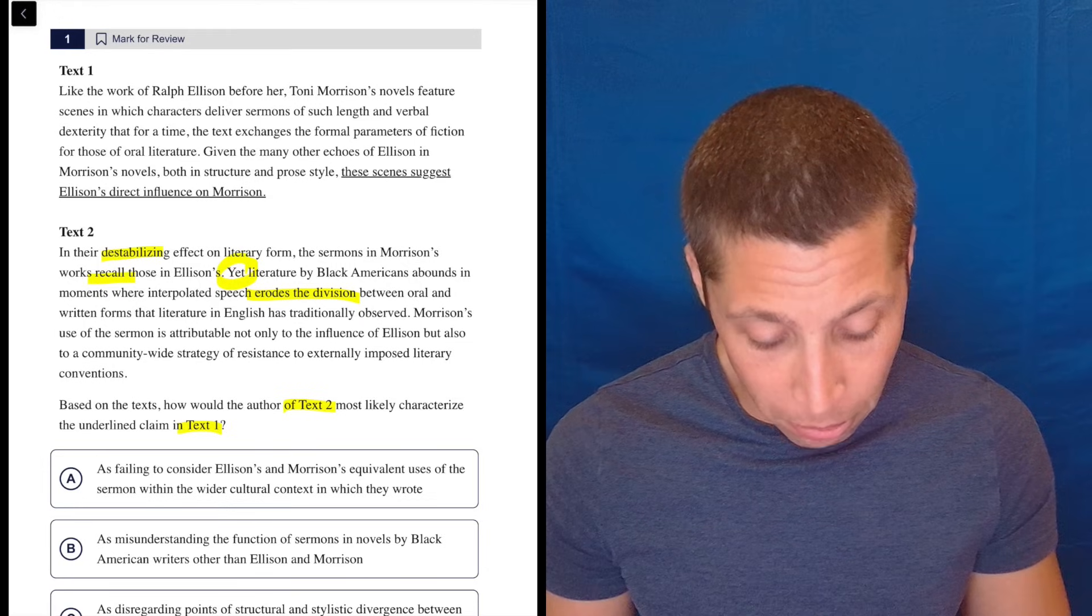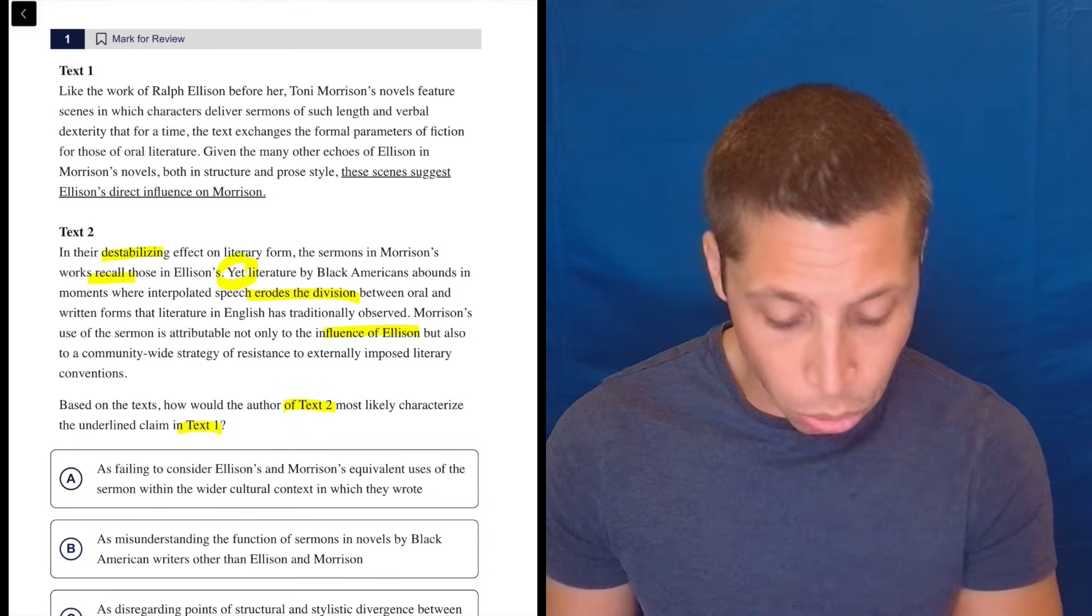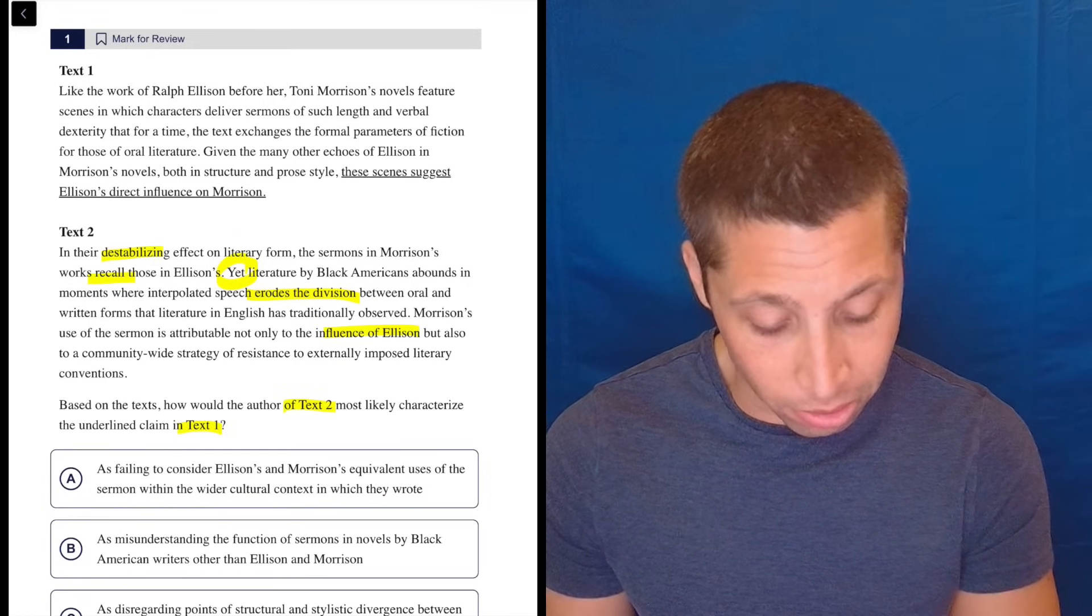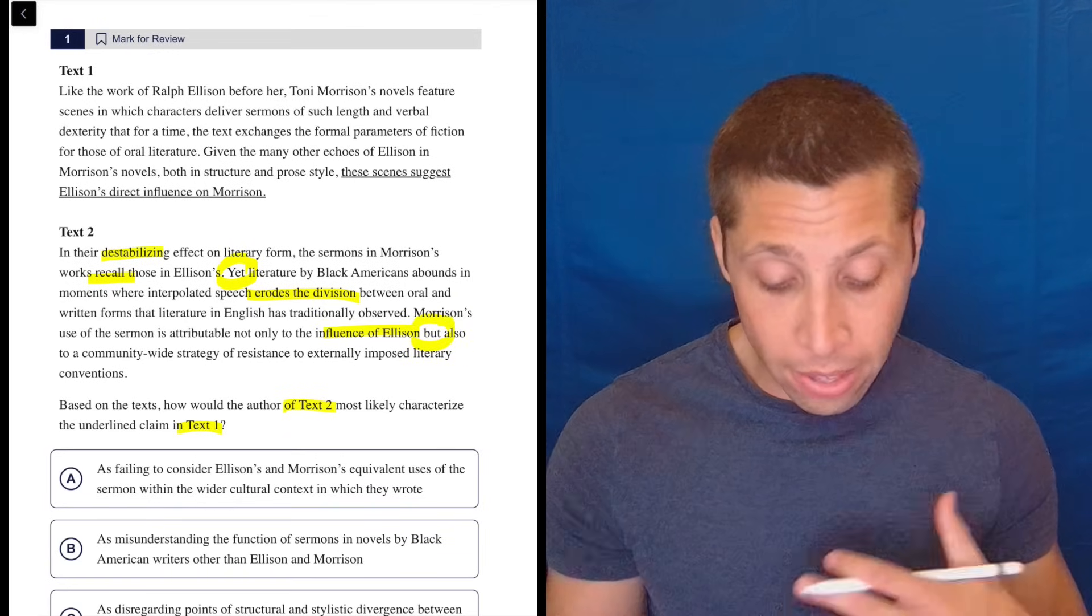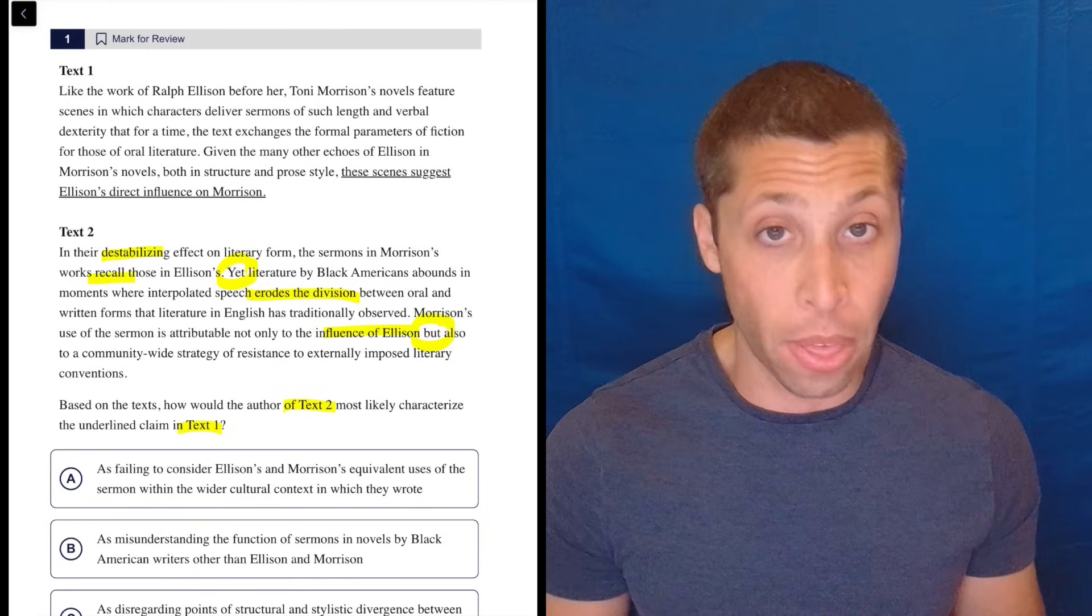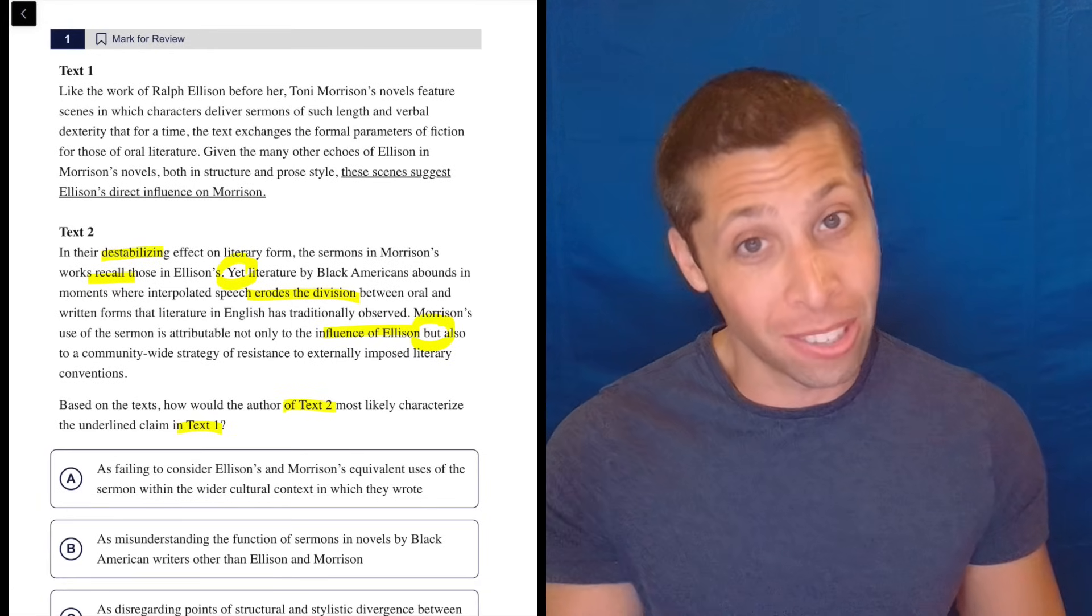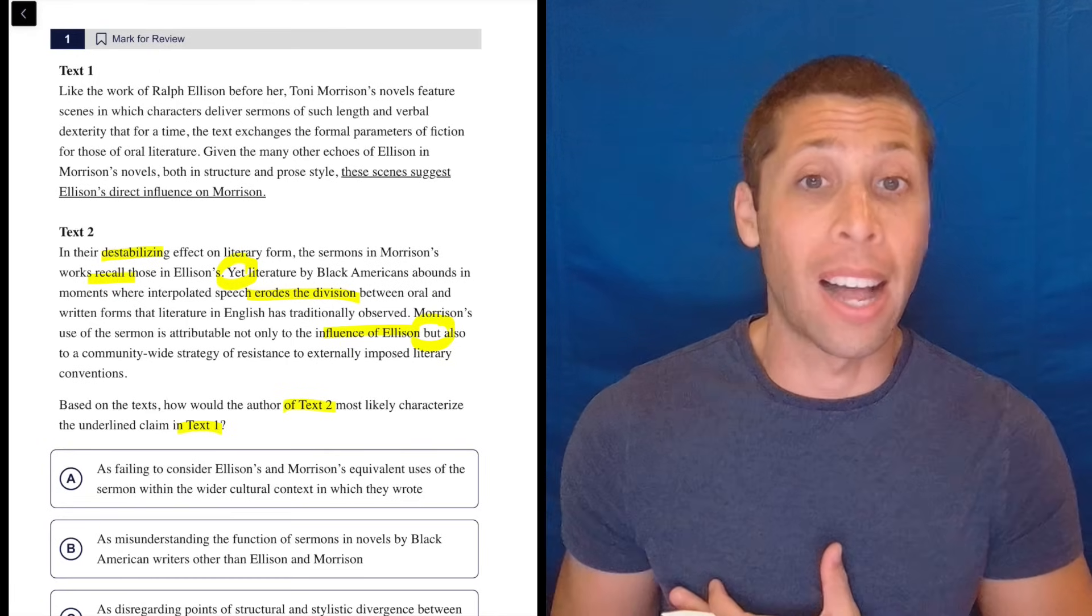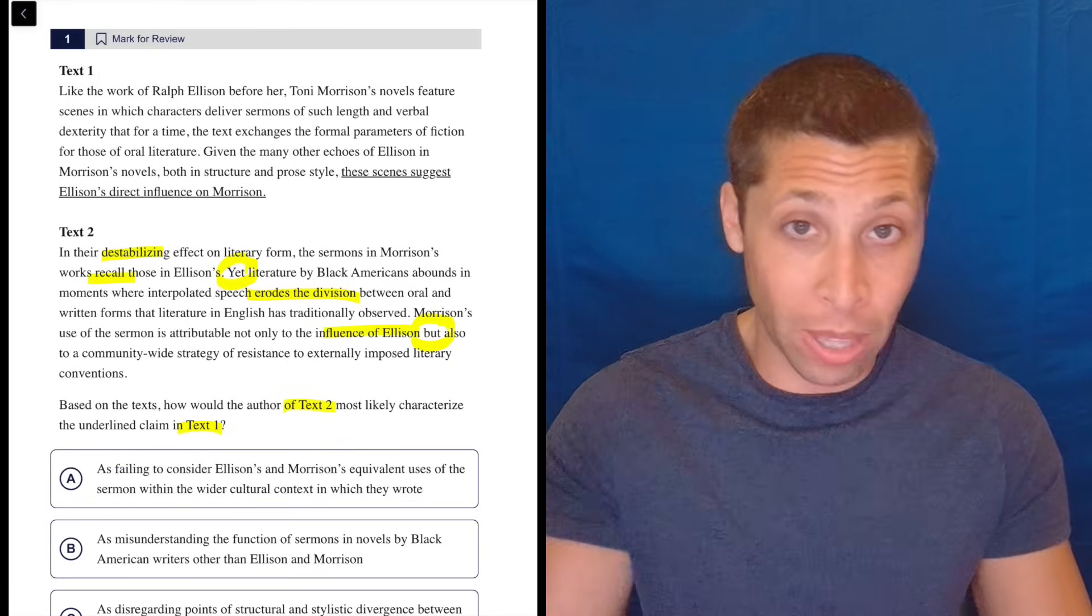Morrison's use of sermons is attributable not only to the influence of Ellison, but also to a community-wide strategy of resistance to externally imposed literary conventions. All right. The thing I notice in both cases here is there's a but. They're saying that there's an effect, there's some sort of influence, but then there's this other thing. So the buts are always the most important words in these passages. So they stand out to me, but I don't have a great sense about what this is about, not because I don't have the context, but because the phrasing of this passage is so difficult.